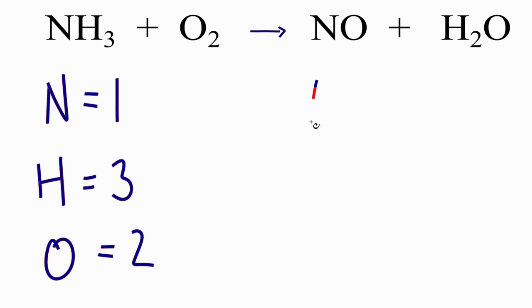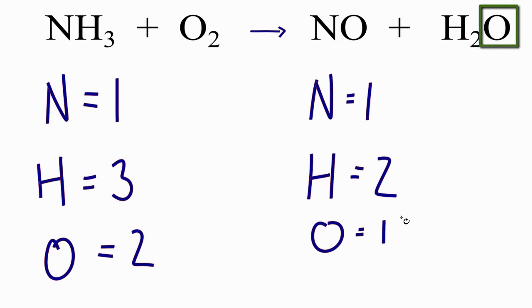On the product side, for nitrogen, we have one there. We have hydrogen, two right there. And then oxygen, we have one here. And we have this one here. That gives us a total of two oxygen atoms on the product side.